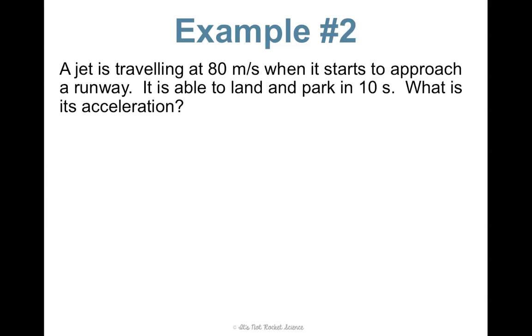Another example. A jet is traveling at 80 meters per second when it starts to approach a runway. It is able to land and park in 10 seconds. What is its acceleration? Well, its initial velocity is 80 meters per second. When it approaches a runway, it lands and parks. When you're in park, your final velocity is 0 meters per second. It does this in a time of 10 seconds, and again, we're looking for acceleration.